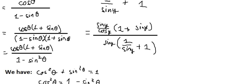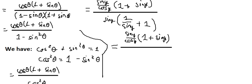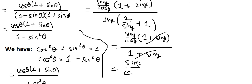So sine y multiplied by one over sine y gives us one. Sine y with the remaining term gives us sine y, and now we have the simplified expression. We simplify further to get sine y over cosine y, which equals tan y. And this is the final answer for question number two.